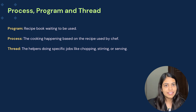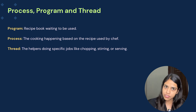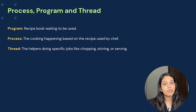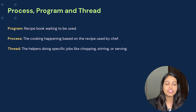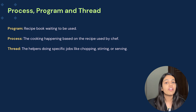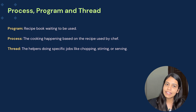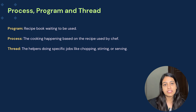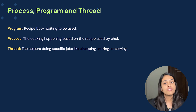So in simpler terms: a program is a set of instructions — if I have to prepare pasta, the recipe book is the program. A process is basically a program in execution or in running state — so if I start preparing pasta, that has become a process. Threads are basically helpers of the process; they divide the work into simpler tasks. So if someone is assisting me with making the pasta, like cutting or chopping, those are the threads.